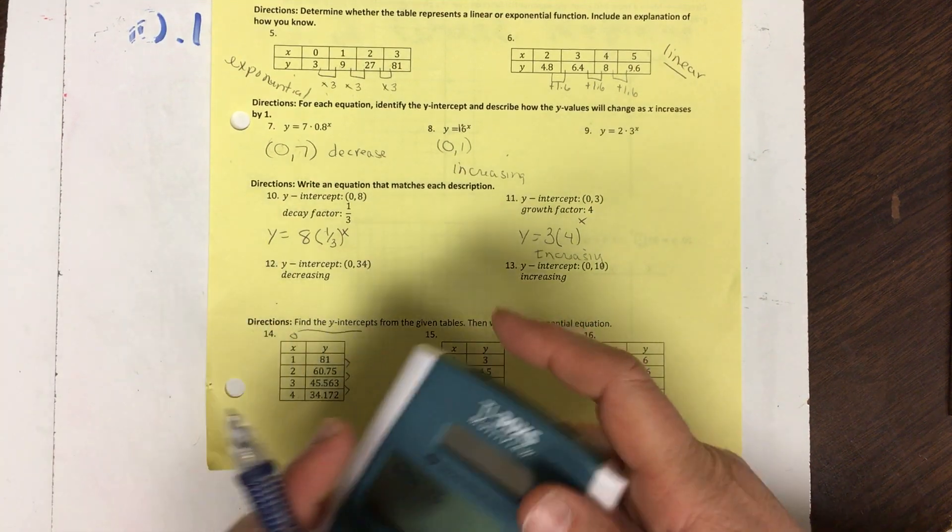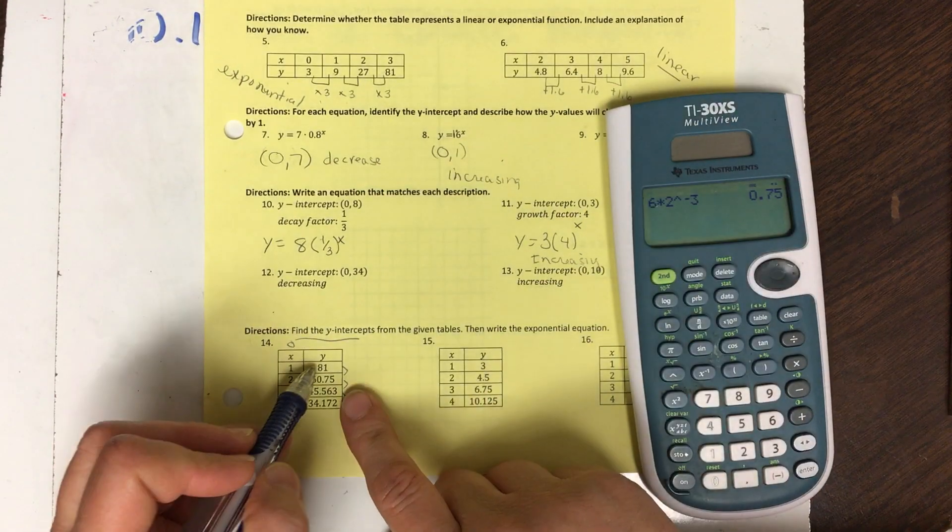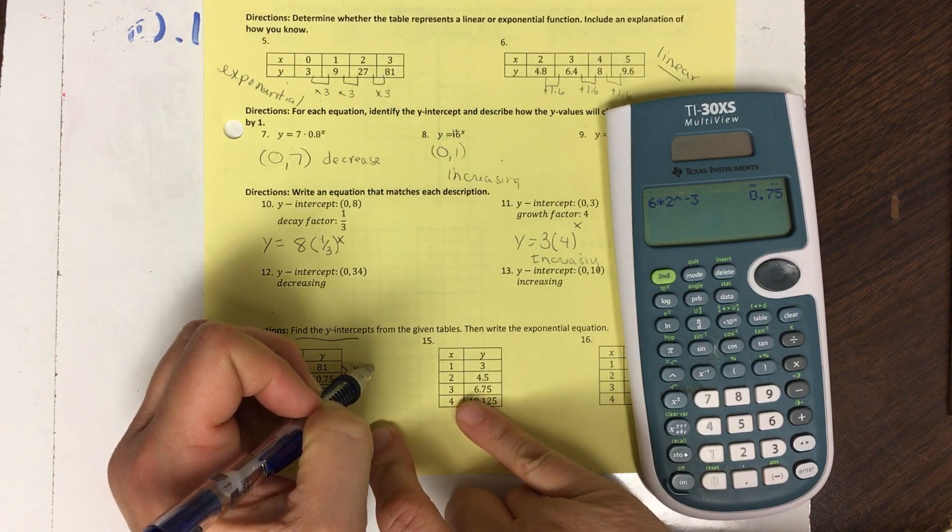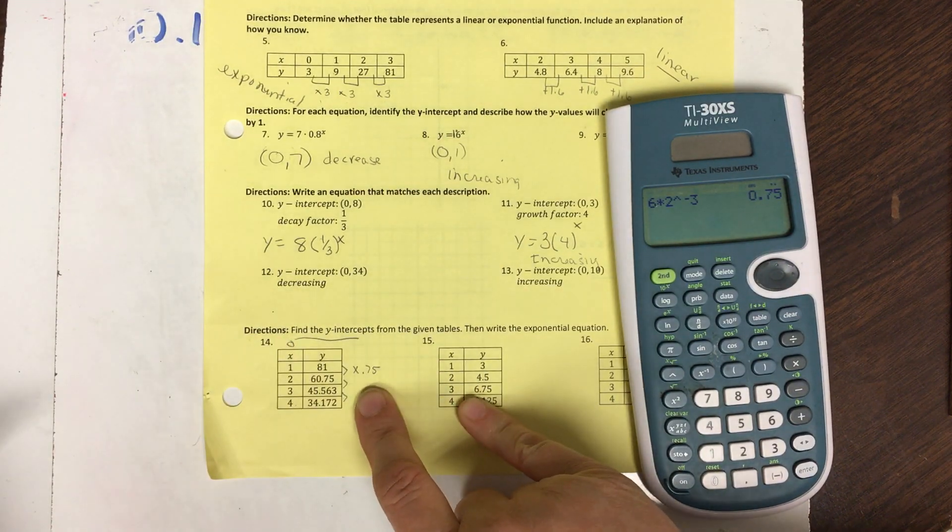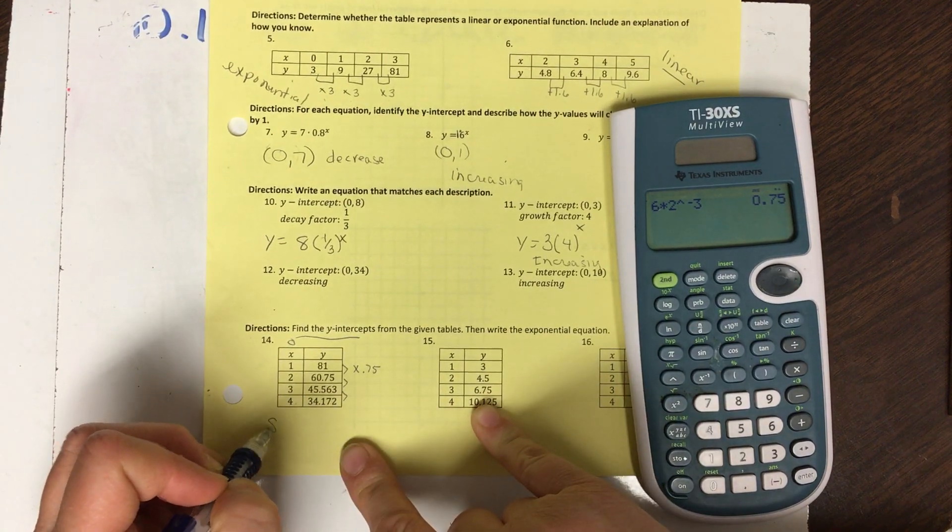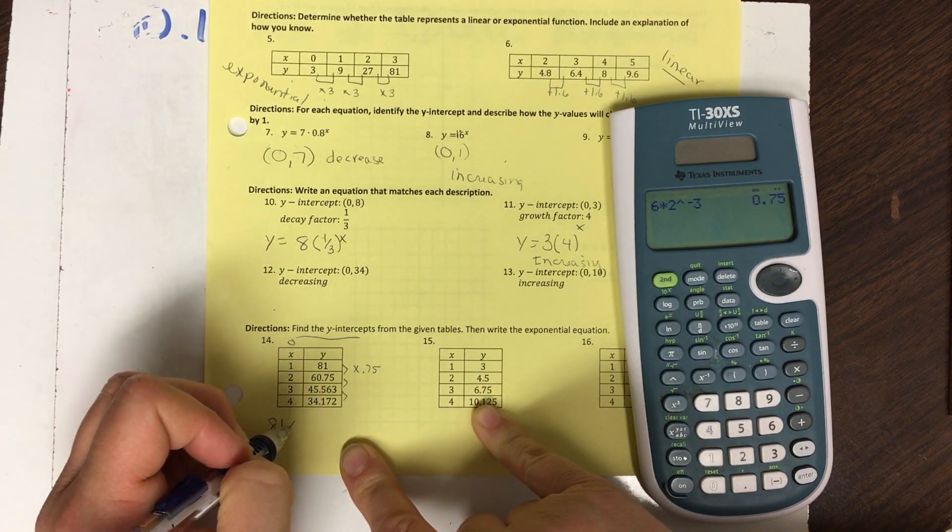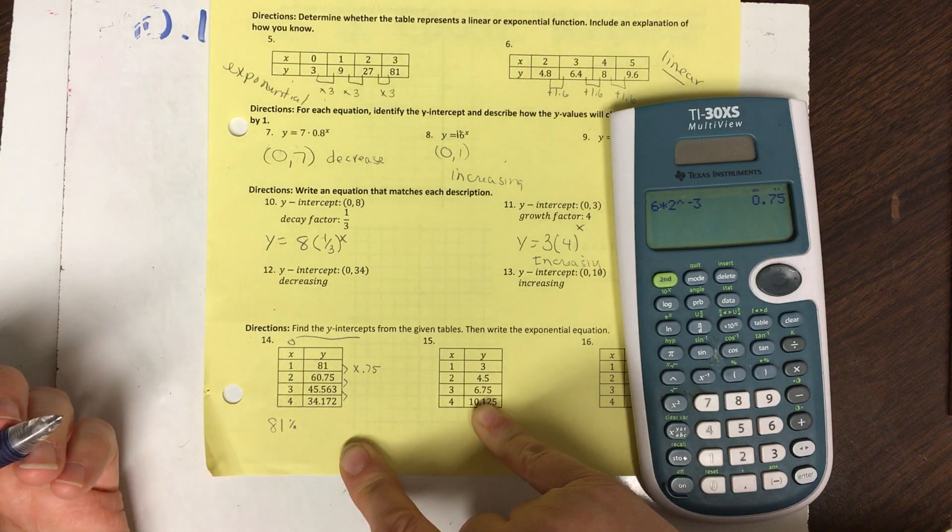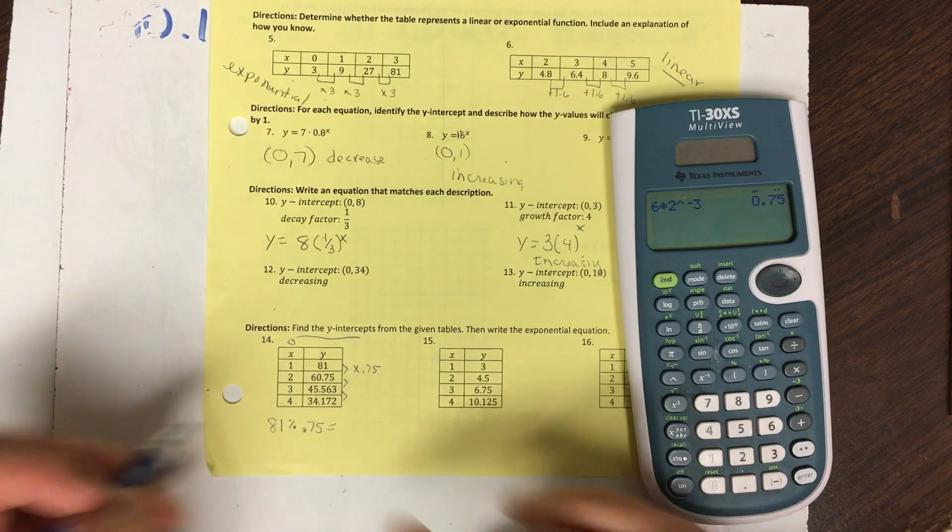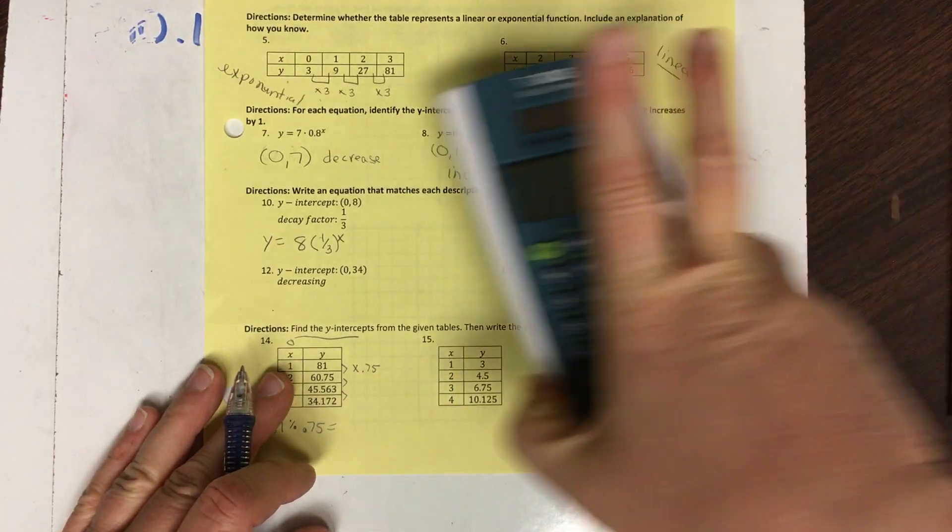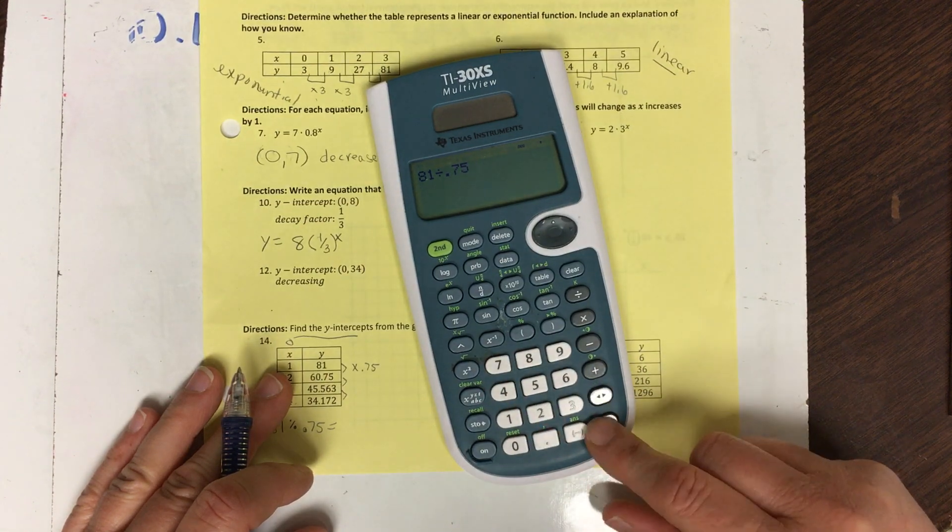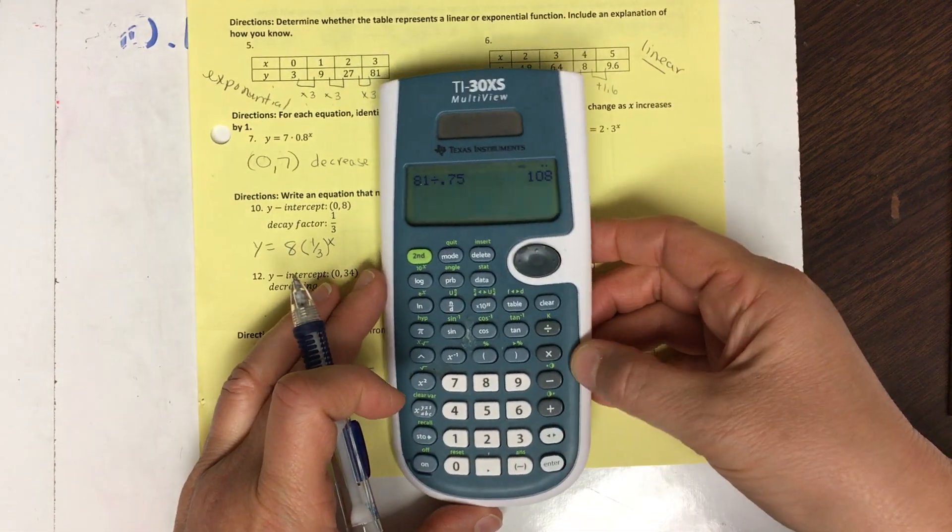So I put this in my calculator before, and to go from here to here, I'm multiplying by 0.75. So to go the opposite direction, the opposite of multiply is to divide. So I would divide 81 by 0.75. And I get 108.